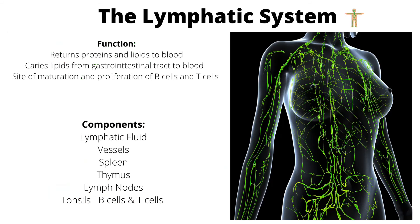The lymphatic and immunity system's main function is to return proteins and lipids to blood, carrying them from the GI tract. It is the site of maturation and proliferation of B and T cells, and it defends the body against pathogens through a network of lymphatic vessels carrying clear fluid called lymph. Components include lymphatic fluid, vessels, the spleen, thymus, lymph nodes, and tonsils.